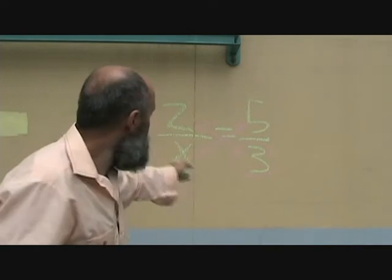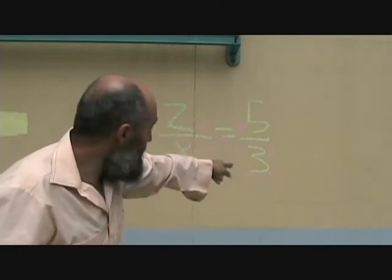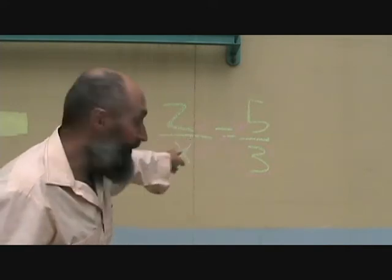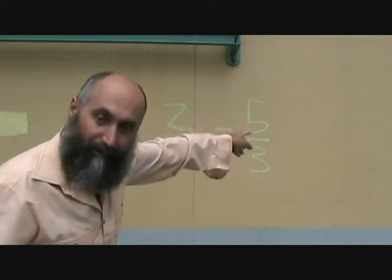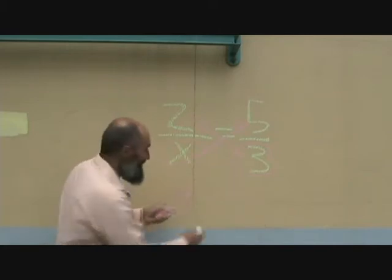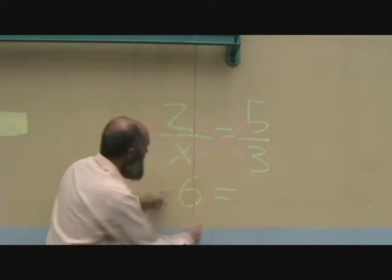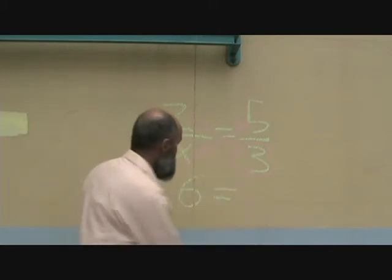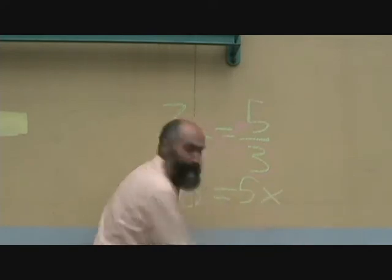With cross-multiplication, all you do is take the denominator here, kick it up to the numerator over there, take the denominator here, kick it up to the numerator over there. So on this side, it becomes 2 times 3, which is 6. And on this side, it becomes 5x.